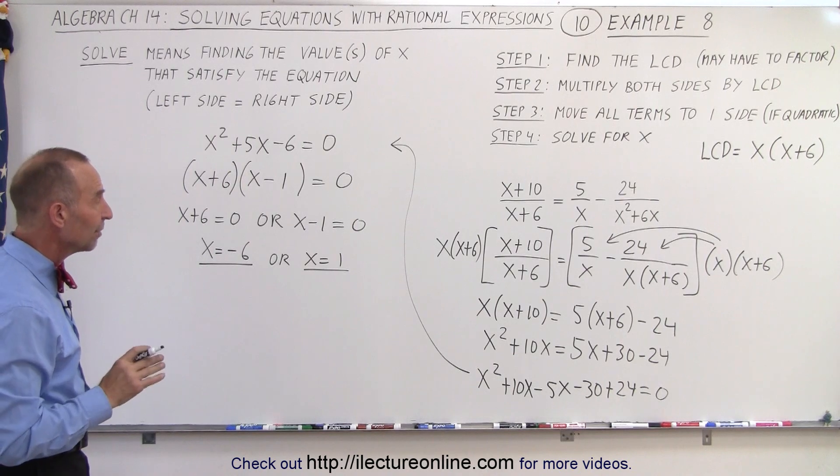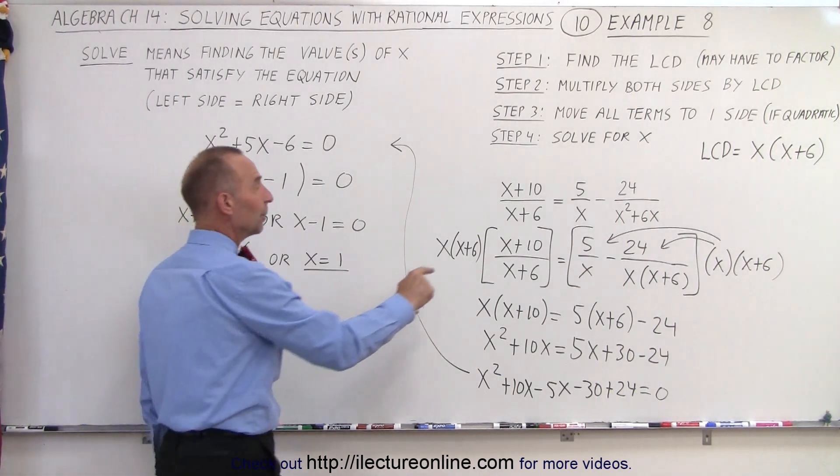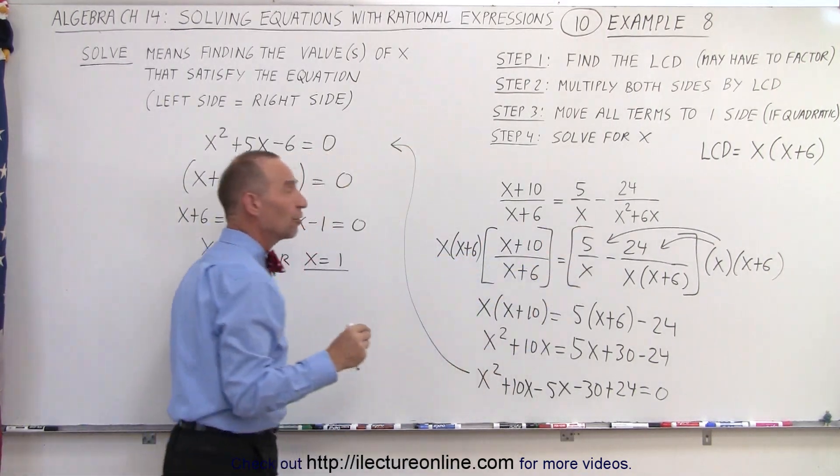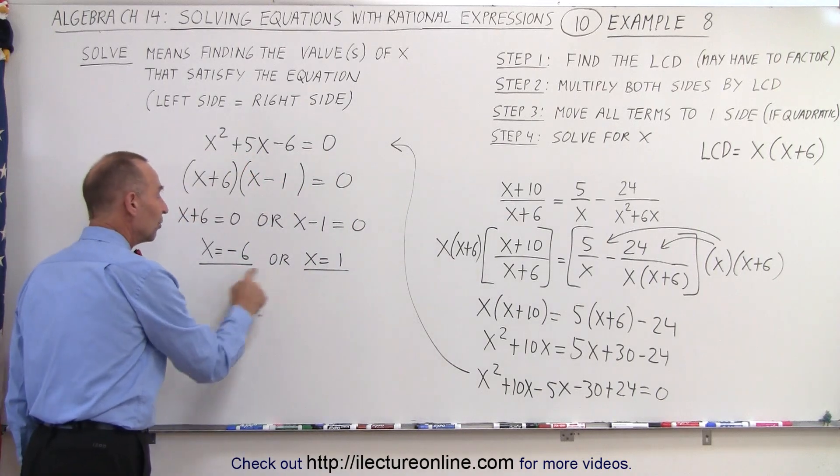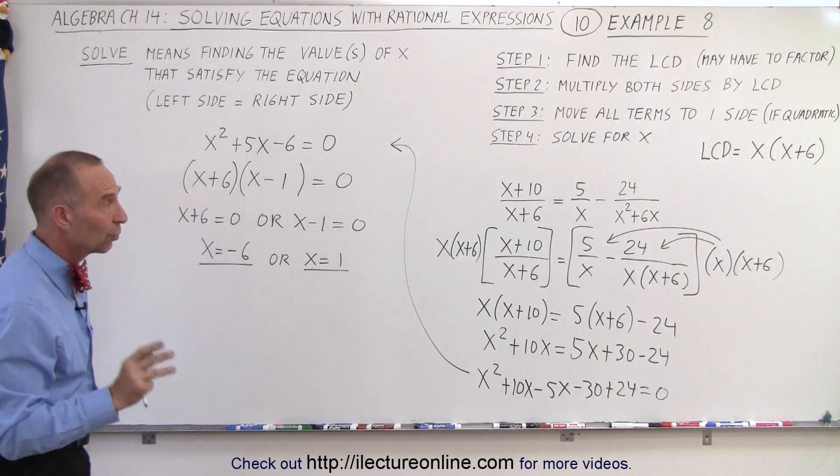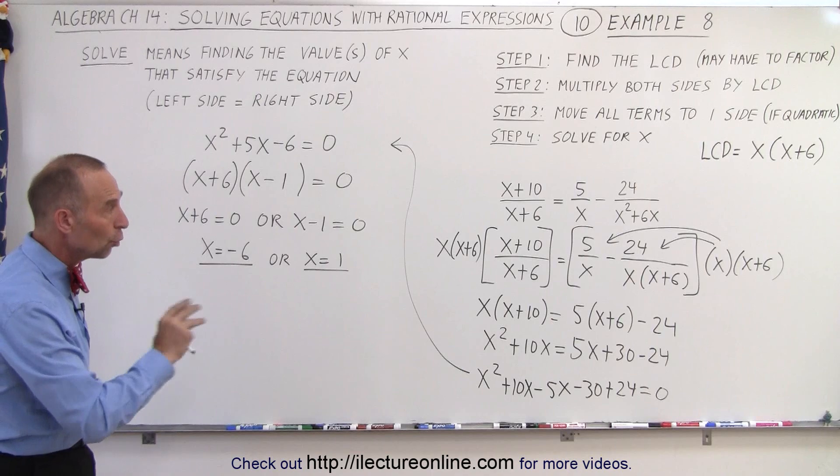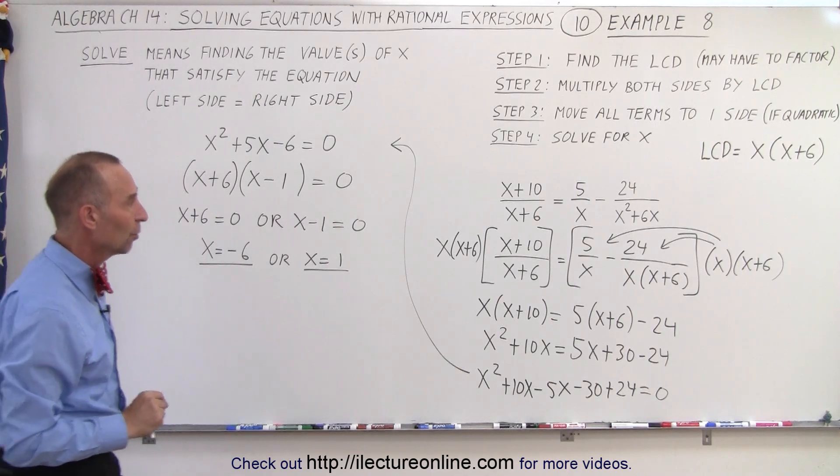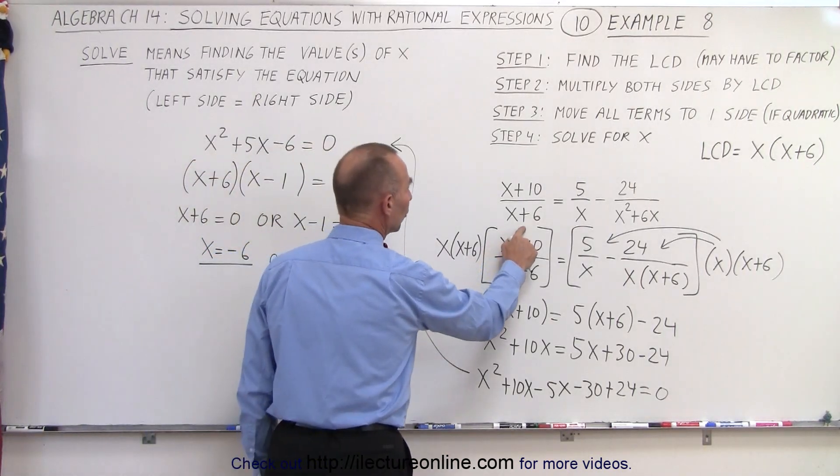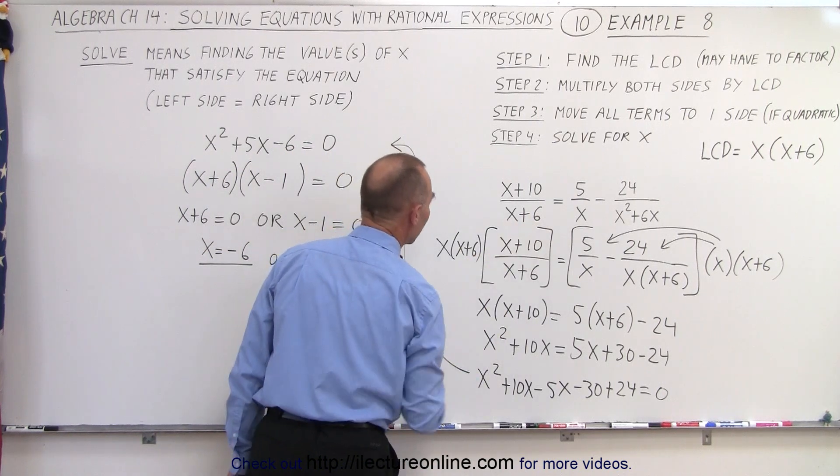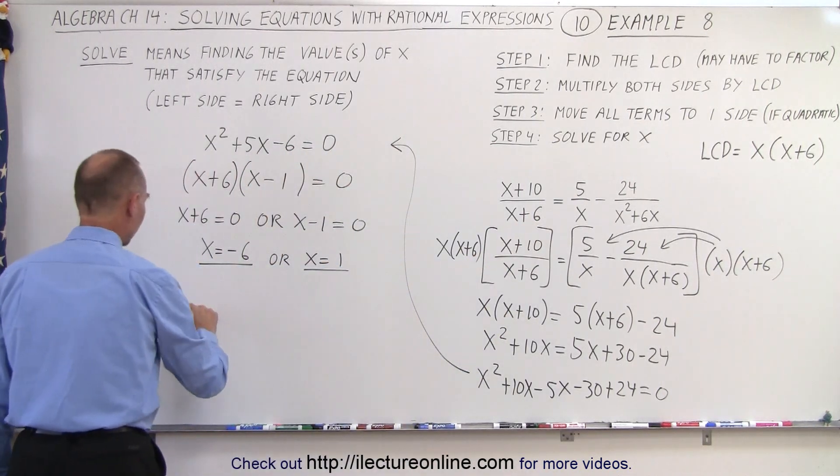Remember, if we have the variable in the denominator, we have to make sure that none of these possible solutions violates the rule that we can have no zero in the denominator. So when we take a look over here, notice what are some of the values that x cannot be. In other words, (x+6) should not equal zero.